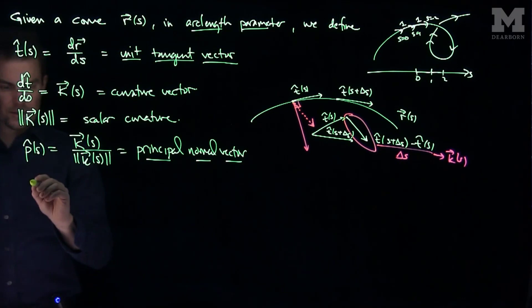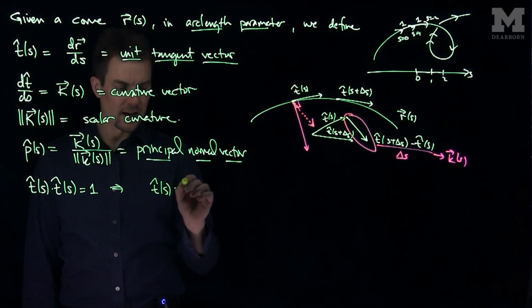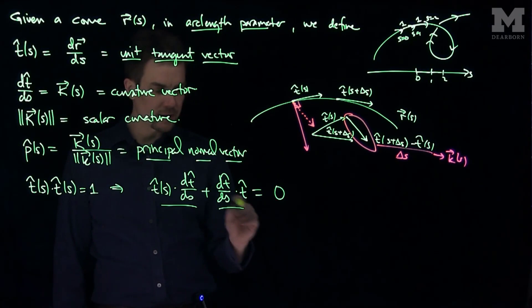And so we can see that algebraically as well. What we can do is we can note that since t is a unit vector, t hat of s dot t hat of s is equal to one. So if we differentiate this, we'll do the product rule. We'll have t hat of s times dt/ds plus dt/ds dot t hat is equal to the derivative of one, which is zero.